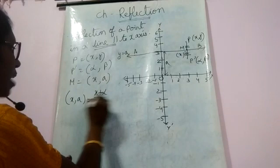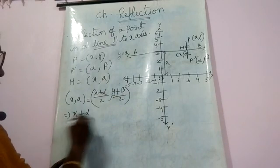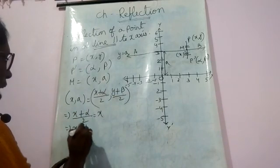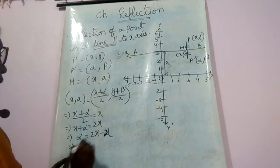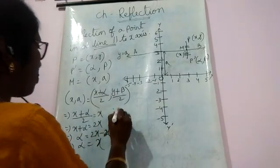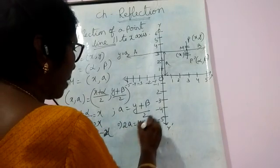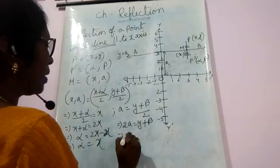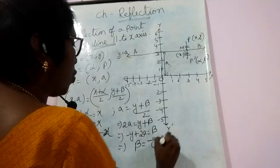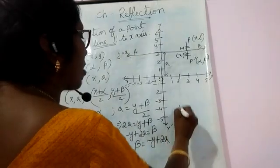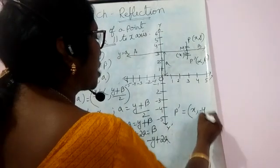Using the midpoint formula: x = (x + alpha)/2 and a = (y + beta)/2. From the first equation: x + alpha = 2x, so alpha = x. From the second equation: 2a = y + beta, so beta = 2a - y, that is beta = -y + 2a. So the coordinates of P' are: alpha = x and beta = -y + 2a.